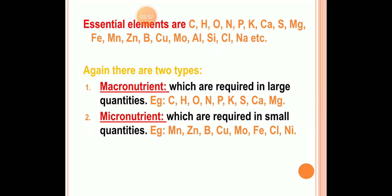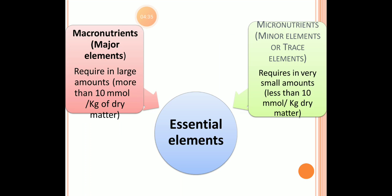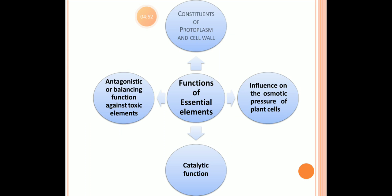Essential elements are again divided into macro and micro elements. Macronutrients are required in large quantities — generally NPK (nitrogen, phosphorus, potassium) as used in fertilizers. Micronutrients are required in small quantities, such as manganese, zinc, boron, copper, molybdenum, iron, and nickel. Macronutrients are required at 10 millimolar per kg of dry weight, while micronutrients are required at less than 10 millimolar per kg.